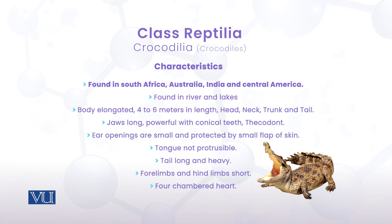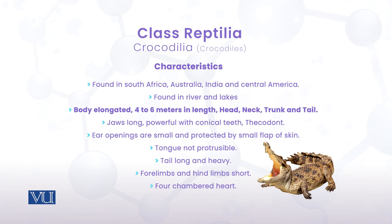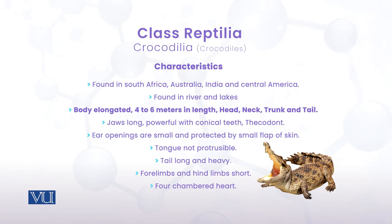Geographical distribution میں یہ South Asia، Africa، Australia، India اور Central America میں found ہوتے ہیں۔ Habitat میں یہ rivers اور lakes میں رہتے ہیں۔ Body elongated ہوتی ہے، size about 4 to 6 meters۔ Body regions: head، neck، trunk اور tail — جیسے lizards کے چار regions ہیں ویسے ہی crocodiles کے بھی یہی چار body parts ہیں۔